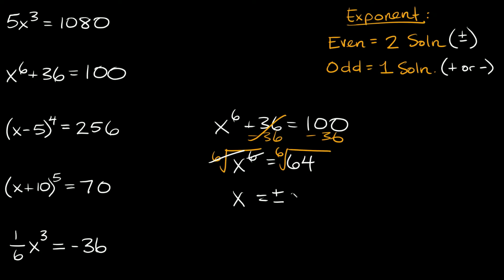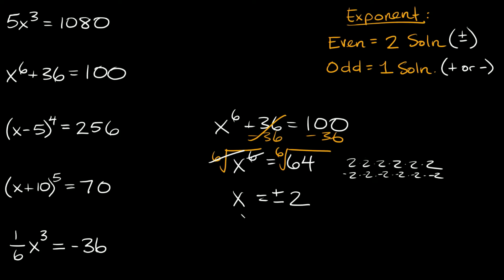The sixth root of 64 — I believe that's 2. Right, 2 times 2 times 2 times 2 times 2 times 2 — six times — is equal to 64. And negative 2 times negative 2 times negative 2 times negative 2 times negative 2 times negative 2 is also equal to 64. That's why whenever we have an even exponent we end up with two different solutions: x is equal to positive 2 and x is equal to negative 2.